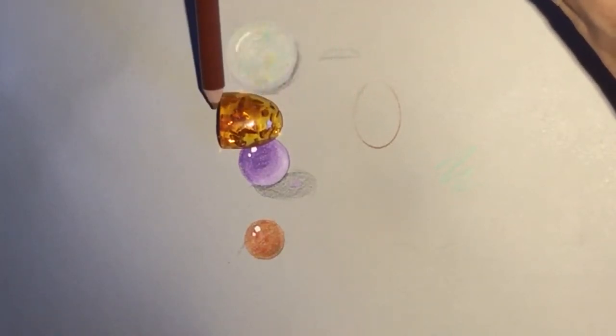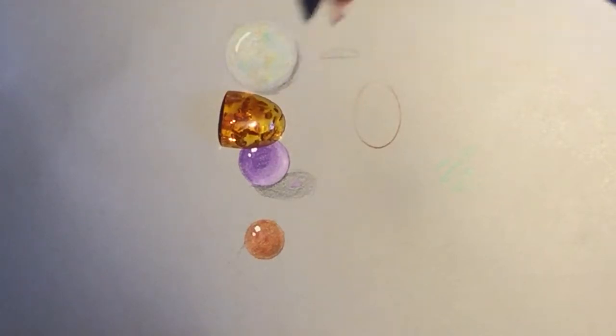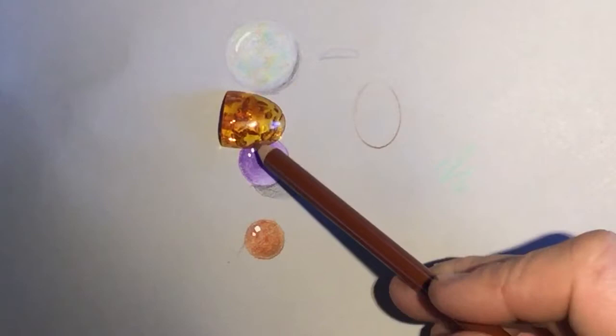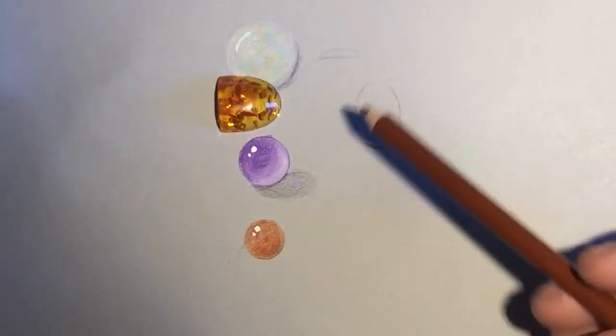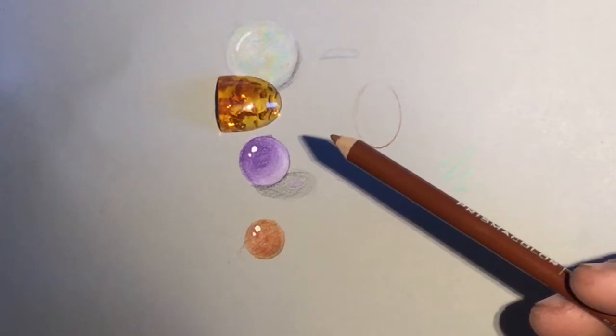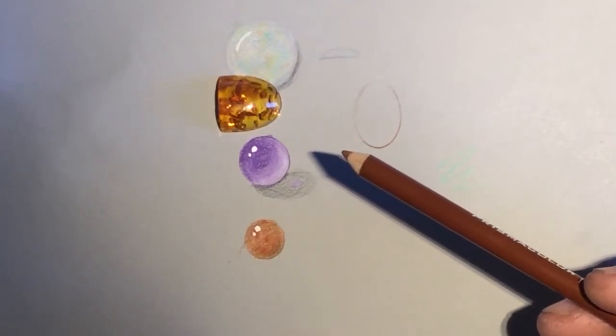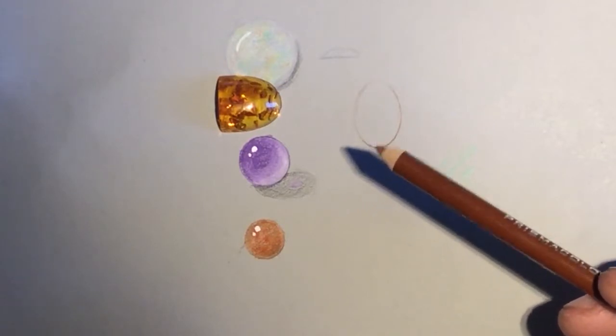If it's a transparent piece similar to this one, you're gonna have light coming through it and it's going to have a lighter section on this side similar to our amethyst. Now, not all amber is transparent. Some of it's translucent and some of it's opaque, so you have to be aware of what you're drawing.